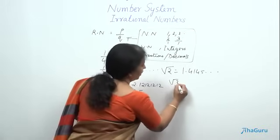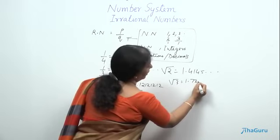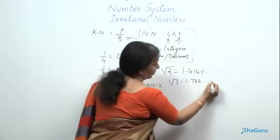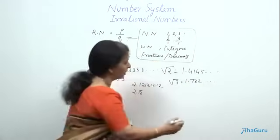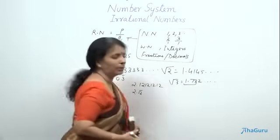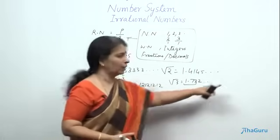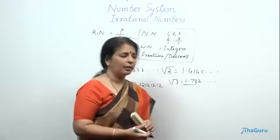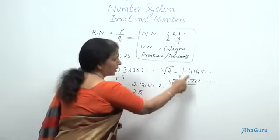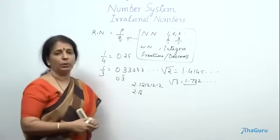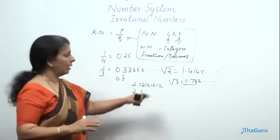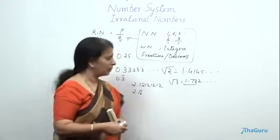You have root 3, which is 1.732... and it goes on. For exams or practical purposes, we stop here. This is another irrational number. These numbers in decimal form cannot be written as P by Q. Hence, they are called irrational numbers.